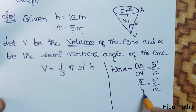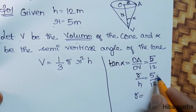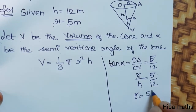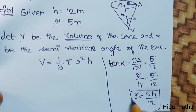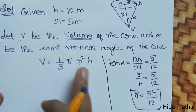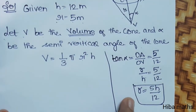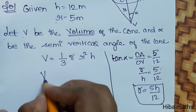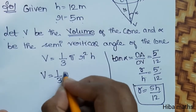We express R in terms of H: R equals 5H/12. Now, substituting into the volume formula, volume equals (1/3)π times R squared times H.